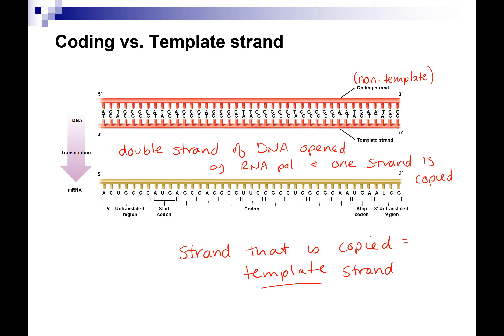The messenger RNA would base-pair with the template strand — that's how it's copied, by base pairing. There's a T here and an A here, a G and a C, and an A in DNA pairs with a U in the RNA. So we're only copying one strand. RNA is always made 5' to 3', just like DNA.